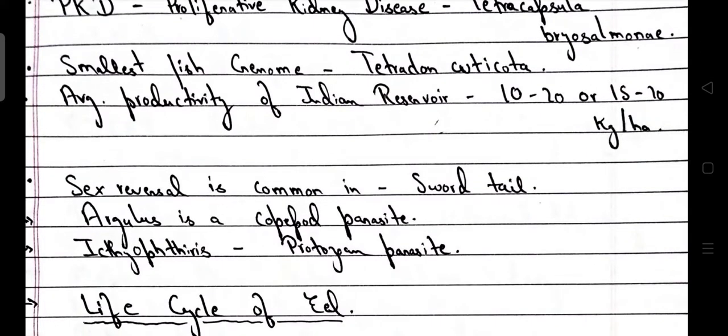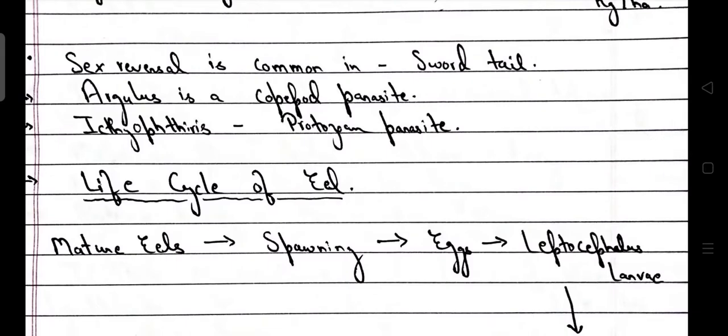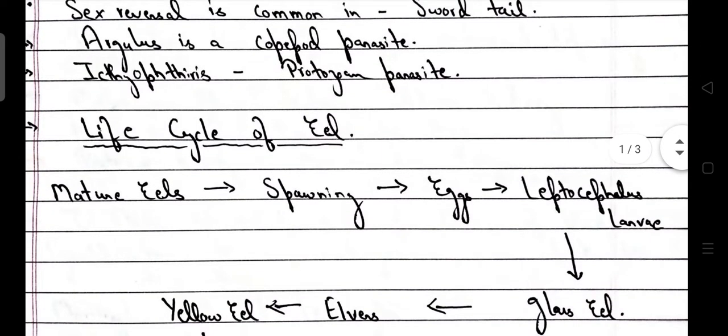Average productivity of Indian reservoirs is 10–20 kg per hectare or 15–20 kg per hectare. Sex reversal is common in Swordtail, whose scientific name is Xiphophorus helleri. Argulus is a copepod parasite, also known as fish lice. Ichthyophthirius is a protozoan parasite that causes Ichthyophthiriasis.